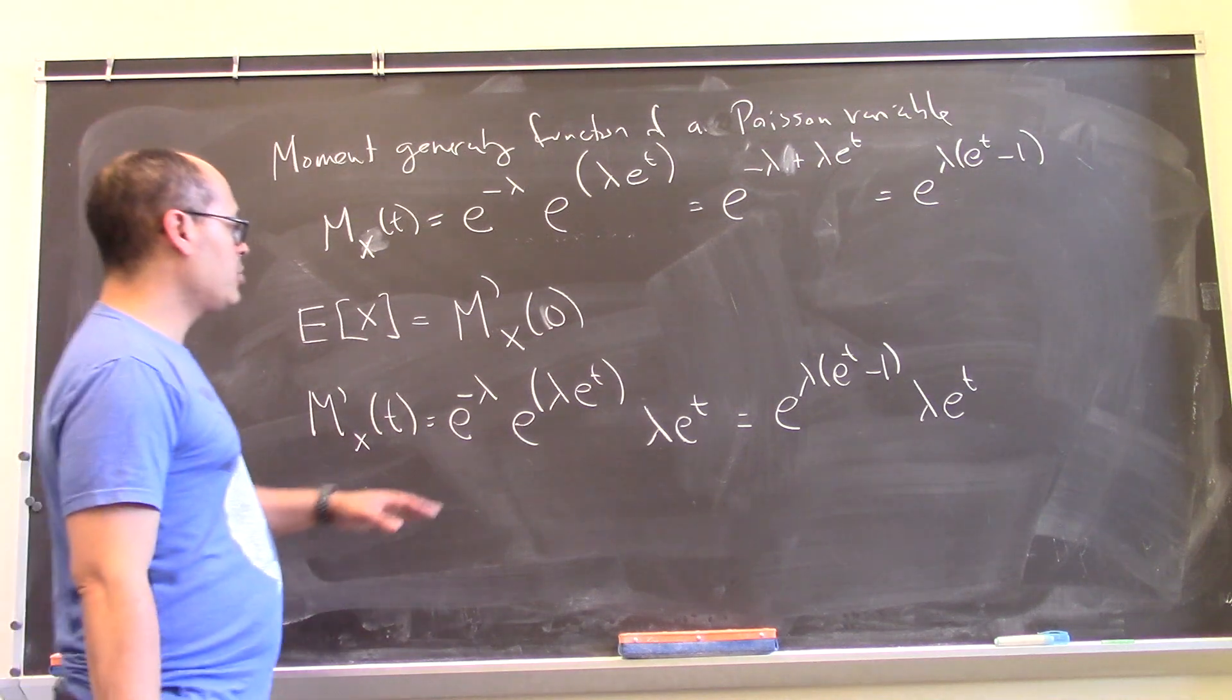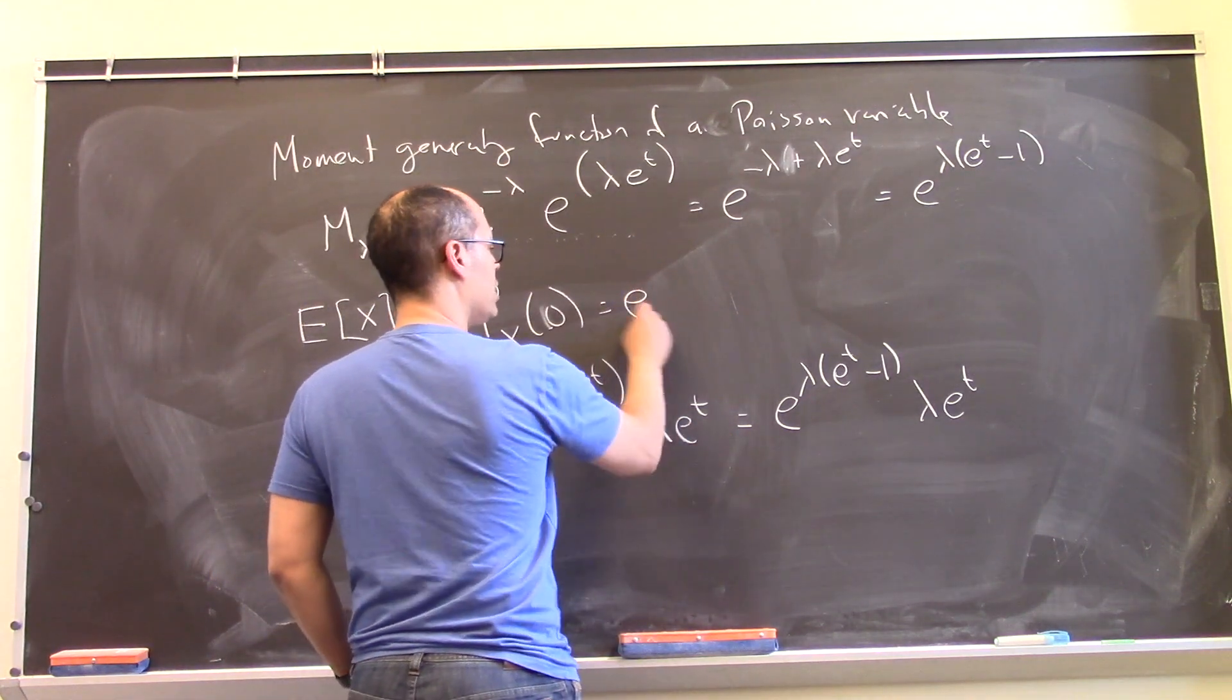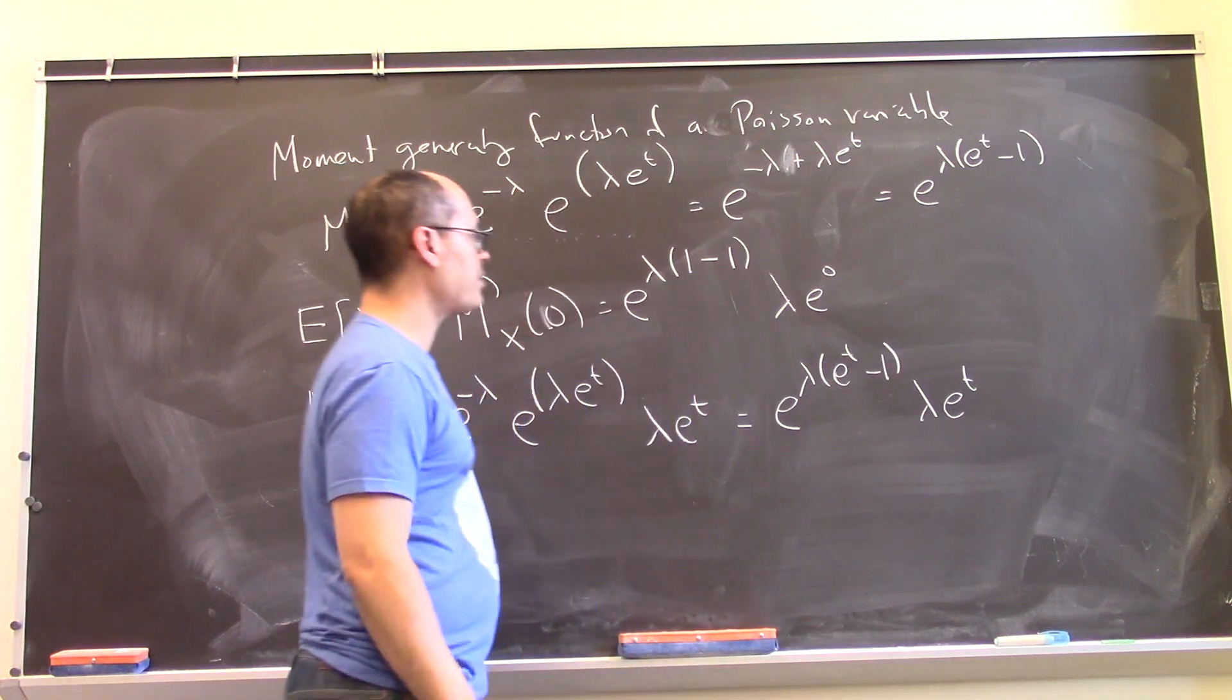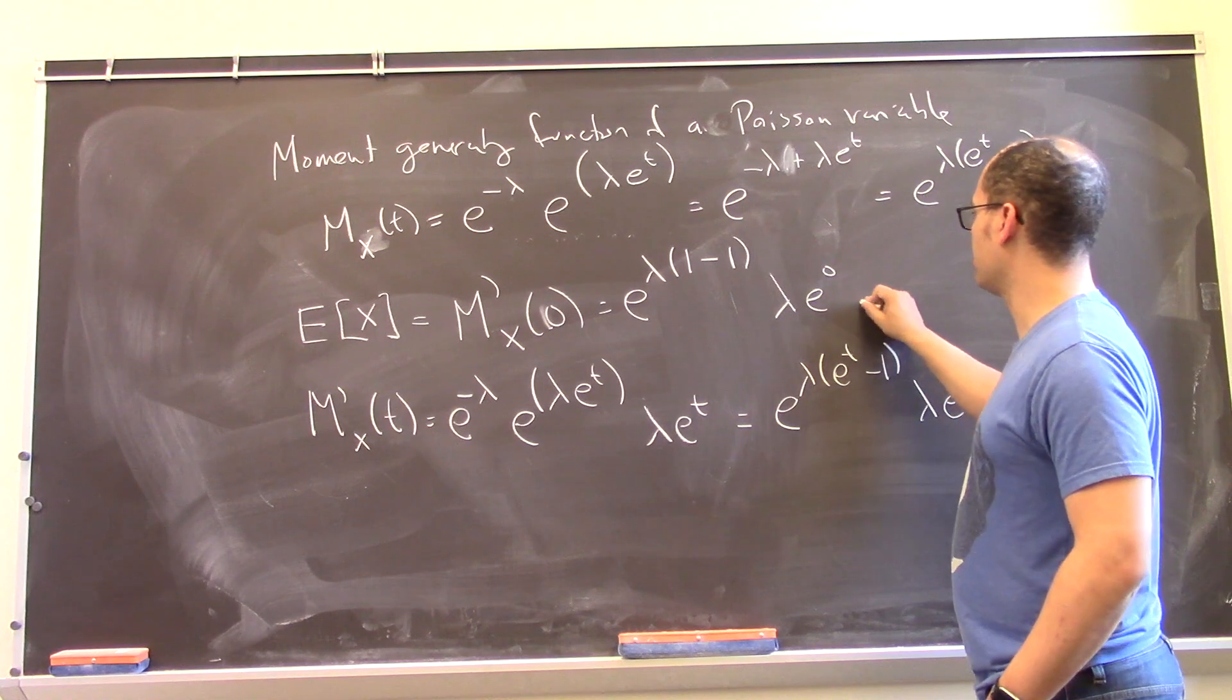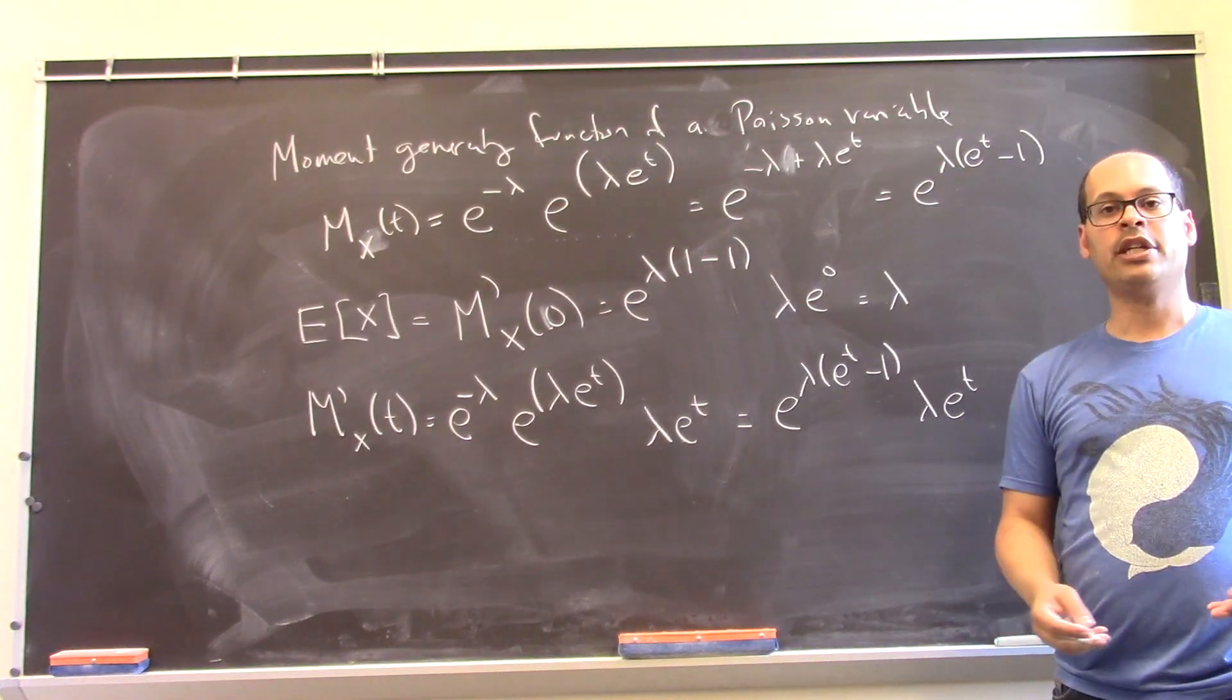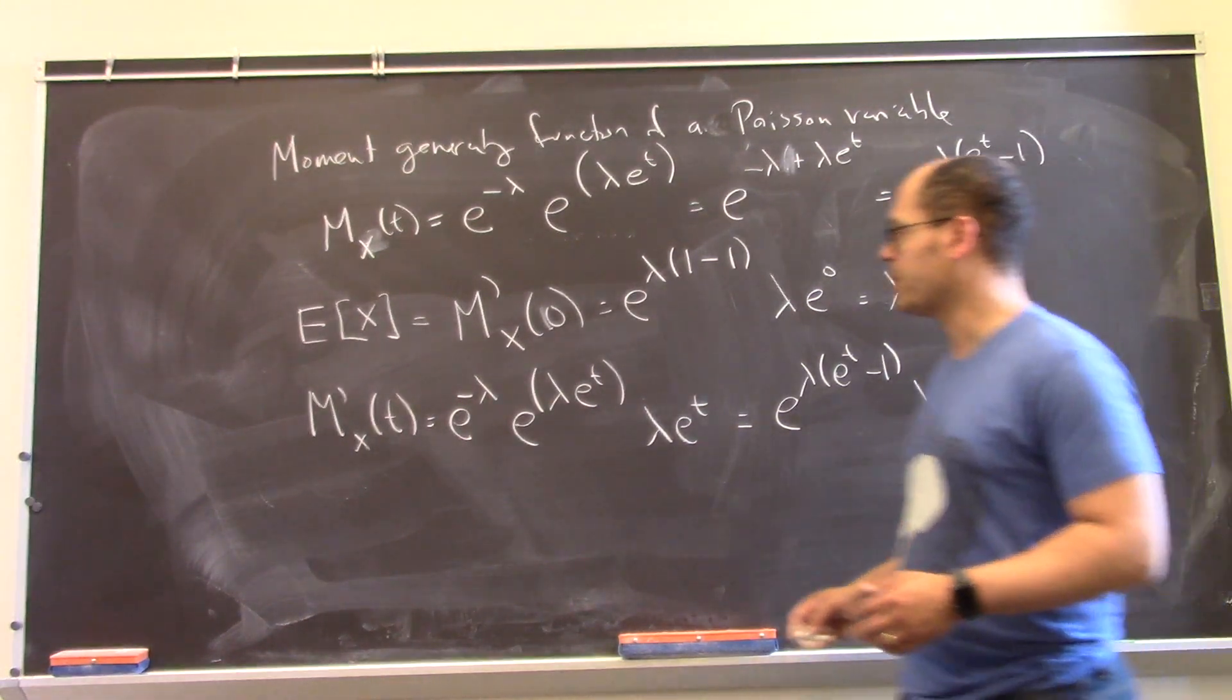Okay, but in any case, we're going to go ahead and plug in 0 for t. And what do we get? Well, so let's just plug that in. e to the lambda times 1 minus 1 lambda e to the 0. So this e to the 0, another e to the 0, I just get lambda. Okay, well, big surprise. This is a Poisson process with parameter lambda, which means that you expect lambda events to happen in any given time period. And indeed, the expected value is lambda. Okay, that wasn't too big a surprise.